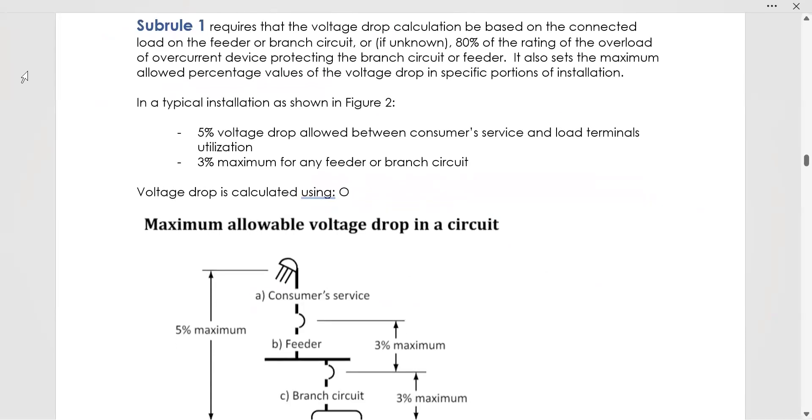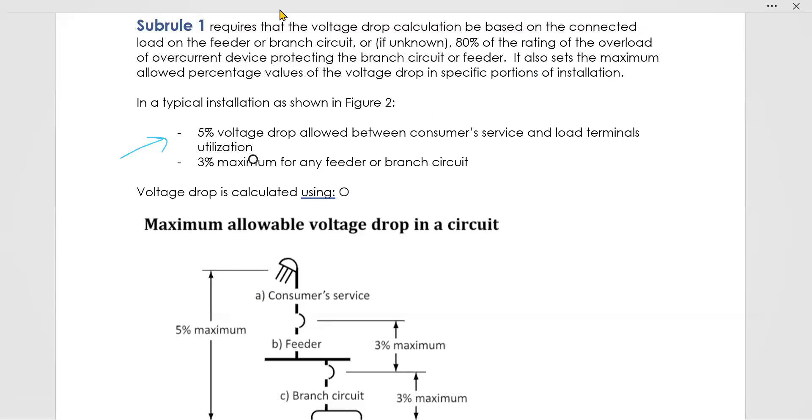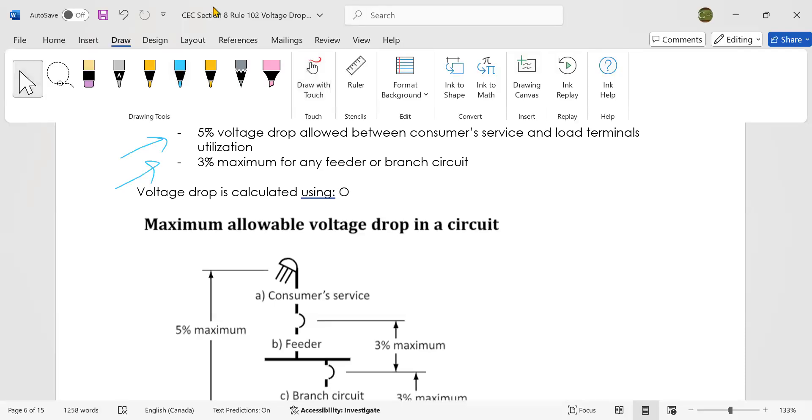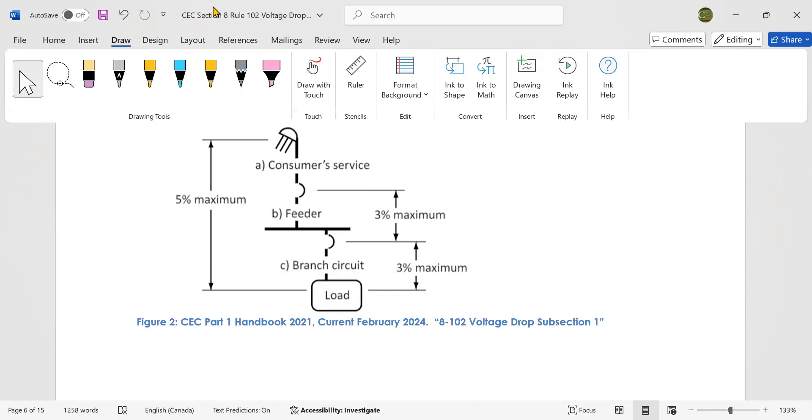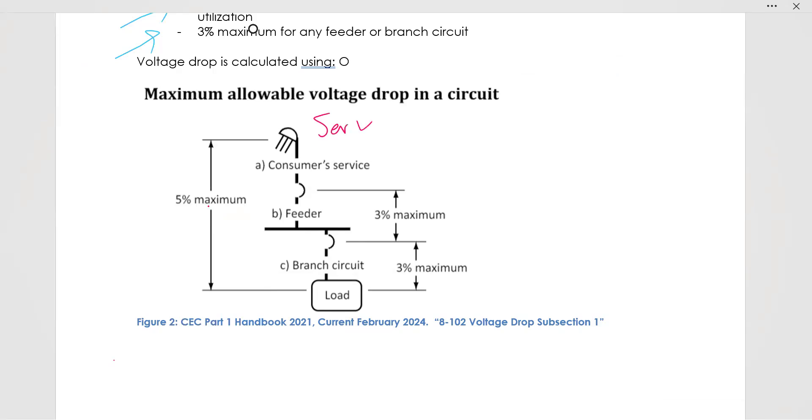So here we go. Subrule one, it basically looks like this. Can't be more than 5% between the service and the load terminals of utilization. So where it is supplied and where it is used, it can't be more than 5%, can't be more than 3% in any feeder or branch circuit in any one. So here is a nice diagram. This comes from the Canadian Electrical Code part one handbook. This one is the 2021 edition. This is also published by CSA. Thank you, CSA, for publishing this. I love this picture. It says, here's a service and here's the load. And between the service and the load, you can't have more than 5% of your voltage dropping. You cannot have more than 3% dropping between feeder and branch. You cannot have more than 3%, sorry, in the feeder. And you cannot have more than 3% in the branch. That's what it says. That is subrule one. Pretty simple and straightforward.